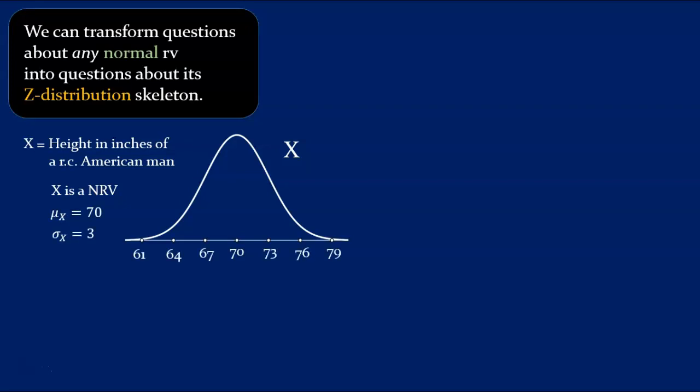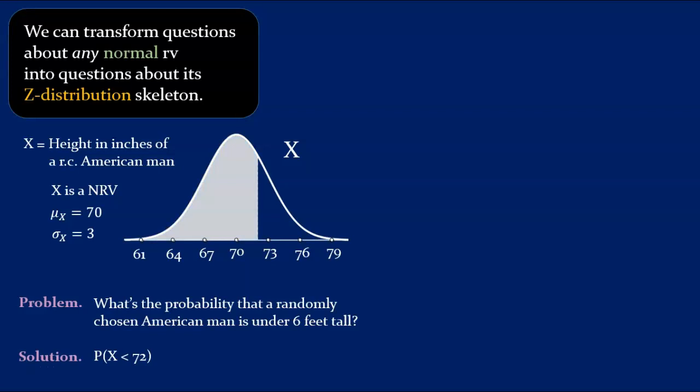Let's see how by looking at an example. Let x be the height of a randomly chosen American man. This is a normal random variable, with a mean of 70 inches and a standard deviation of 3 inches. Now for a question. What's the probability that a randomly chosen American man is under 6 feet tall? Or in symbols, what's the probability that x is less than 72? This probability corresponds to the shaded area under the graph. We can turn this into a question about the z-skeleton underneath. The probability that x is less than 72 is the probability that z is less than whatever the z-score is for 72.